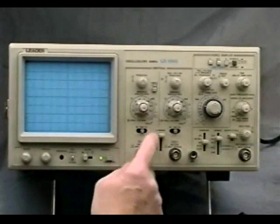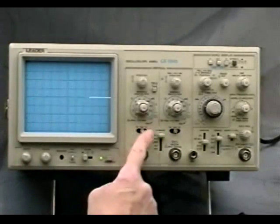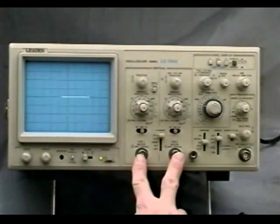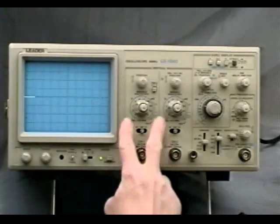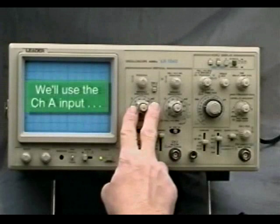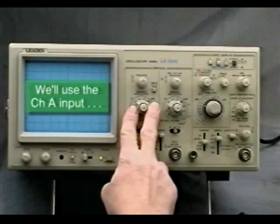Since this is a dual-channel oscilloscope, we have two identical input coupling switches and two identical input VNC connectors. We're going to use the channel A input, and with it, channel A's vertical attenuator and vertical position controls.